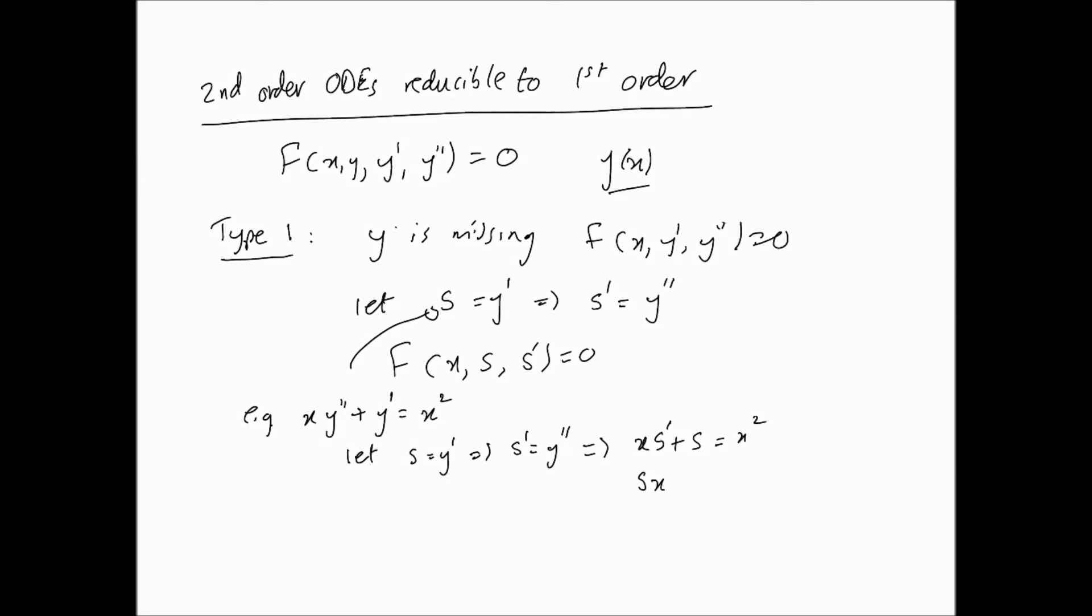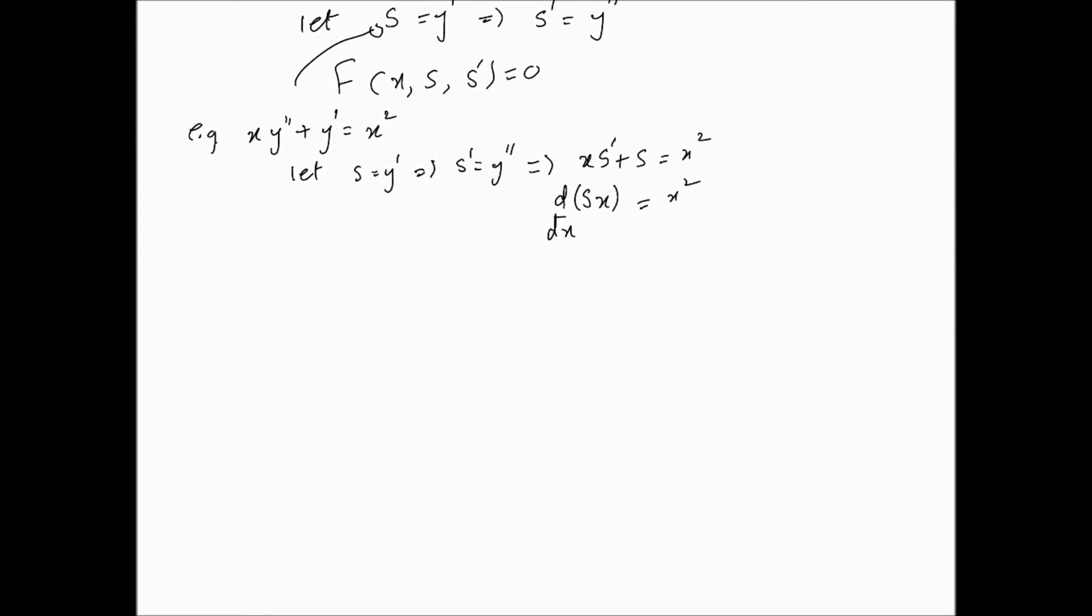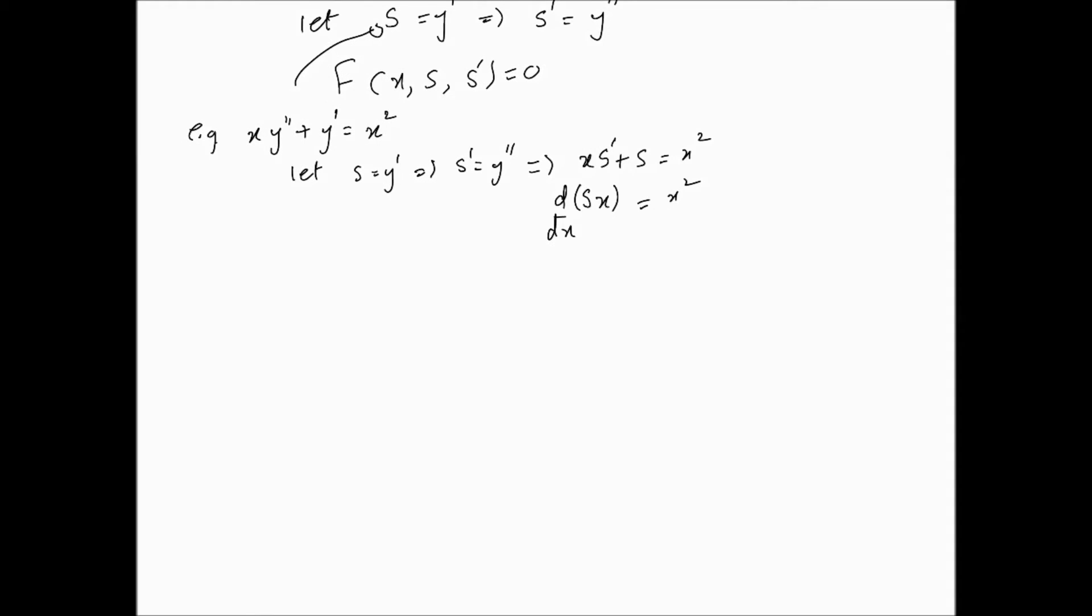In this case, we notice that quite quickly, that this can be written as d(sx)/dx = x², which means that this implies that sx is the integral of x² dx, which further implies that sx is equal to x³/3 + constant C₁. And so we end up with s = x²/3 + C₁/x.